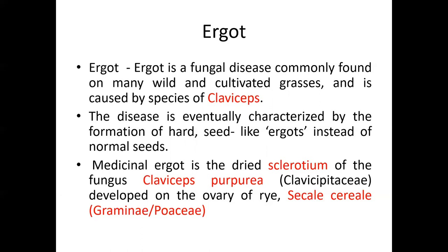Once the sclerotium stage is reached, if the sclerotium is left uncollected, it falls on the ground and under favorable conditions gives rise to stroma — elongated forms, each stroma having a globular head and stalk portion. The head contains a large number of perithecia, each perithecium having flask-shaped structures containing sacks with ascospores. The life cycle thus repeats: ascospore stage → honeydew stage → sphacelia stage → sclerotium stage.